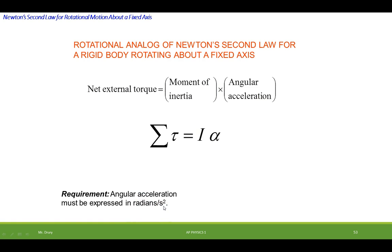And an interesting note is that the AP test does not ask you to ever calculate these I's. It will give it to you. You have to understand though that as you increase radius where the mass is located that the I value is going to go up.